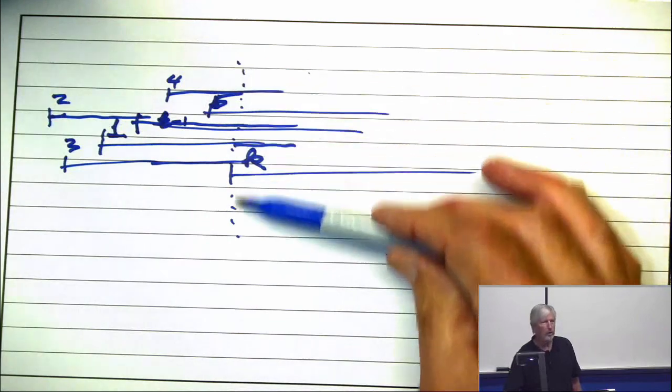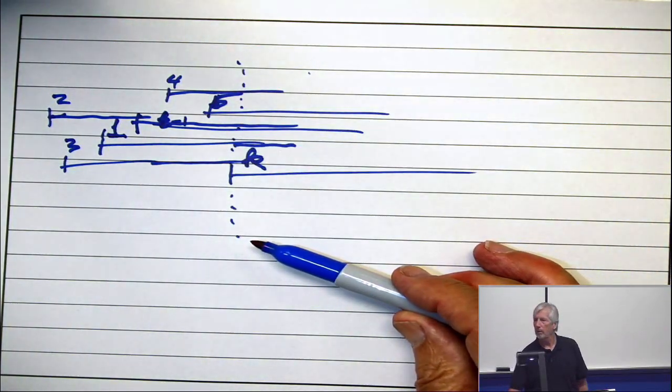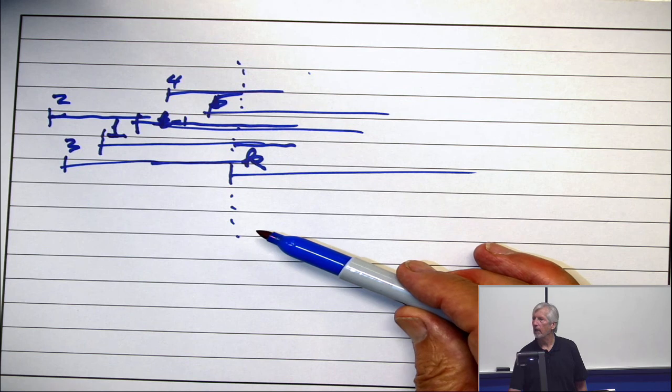And now all those intervals overlap right there. And that forms a clique of size K.